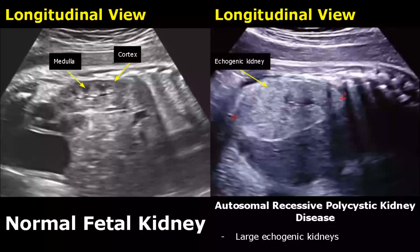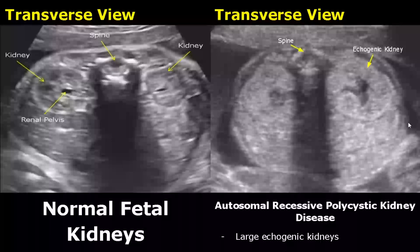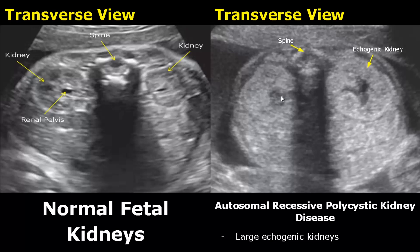In this image we have autosomal recessive polycystic kidney disease. We do not see the cysts on ultrasound because they are too small, but we do see large echogenic kidneys. Here we have a transverse view showing enlarged echogenic kidneys bilaterally.